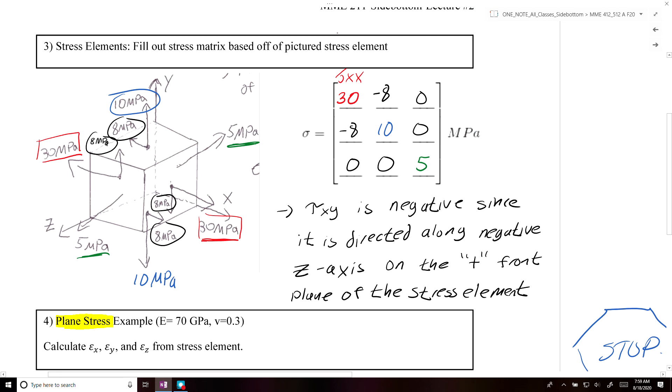Then you had the y-direction, which was going vertical. This was sigma yy. And then you had the normal stress along the z-axis, which was sigma zz. So those are the diagonal terms of your stress matrix.